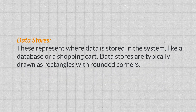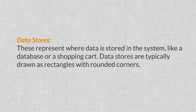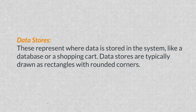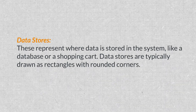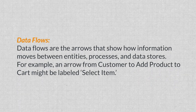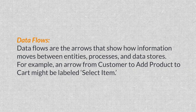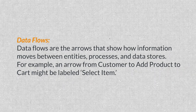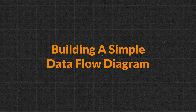Processes show how the data is transformed or acted upon within the system. For example, when a customer adds an item to their cart, that's a process. Processes are usually shown with circles or ovals. Data stores represent where data is stored in your system, like a database or shopping cart. Data stores are typically drawn as rectangles with round corners or as cylinders. Data flows are the arrows that show how information is moving between the entities, processes, and data stores — for example, an arrow from customer to add a product to cart might be labeled select items.